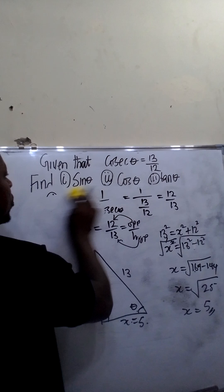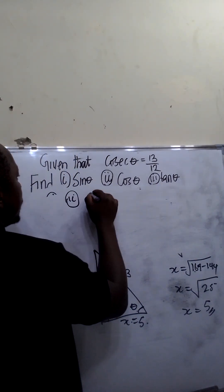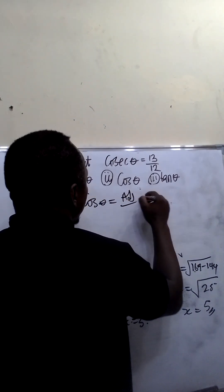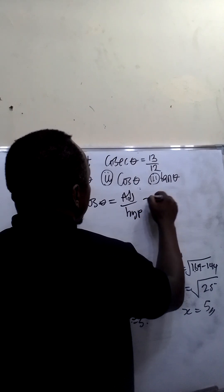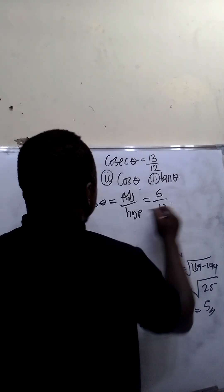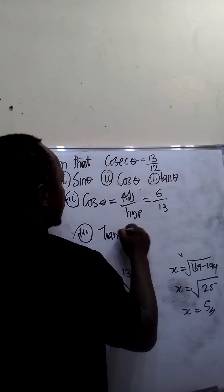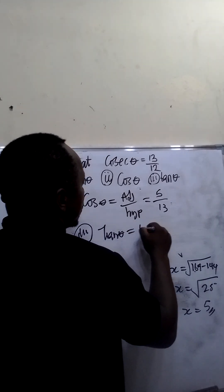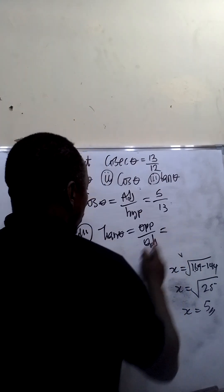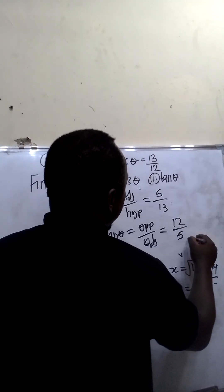The next question asks us to calculate cos theta. Cos theta is equal to adjacent over hypotenuse. Our adjacent is 5, while our hypotenuse is 13. The third question asks us to calculate tan theta. Tan theta is opposite over adjacent. Our opposite is 12, while our adjacent is 5.